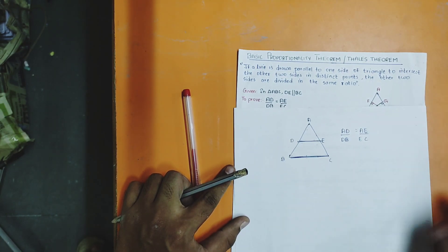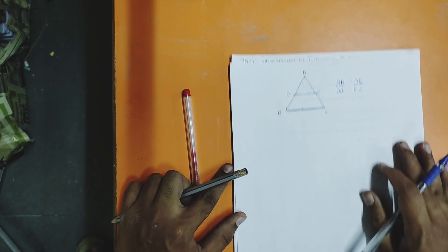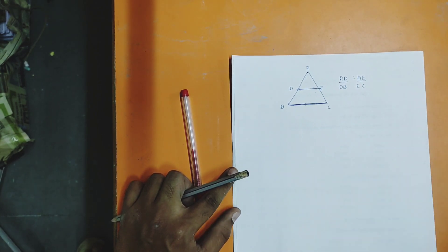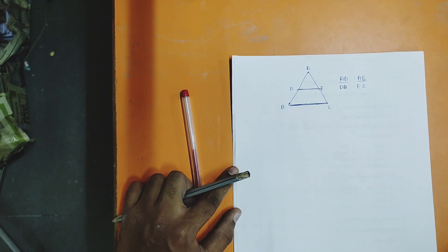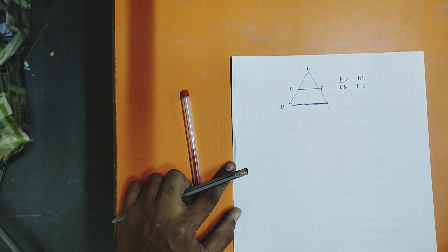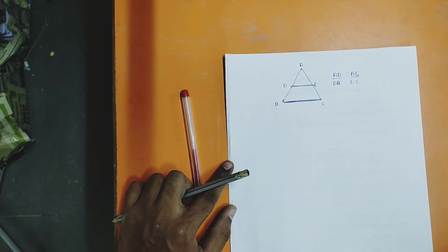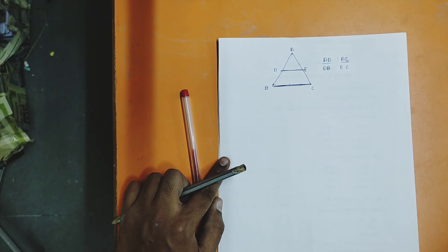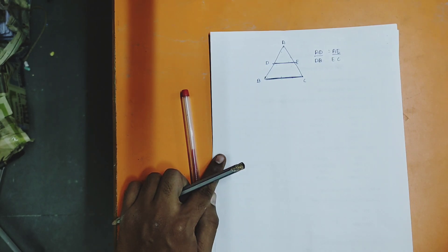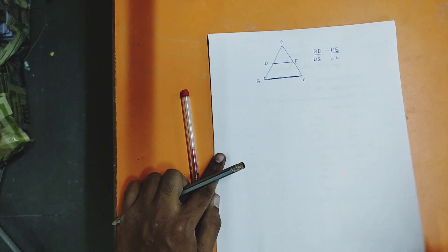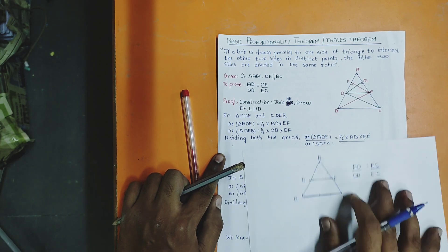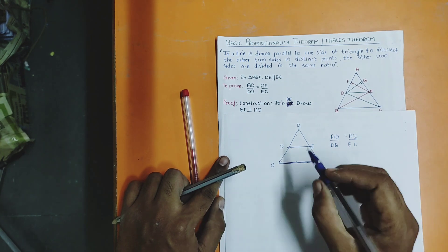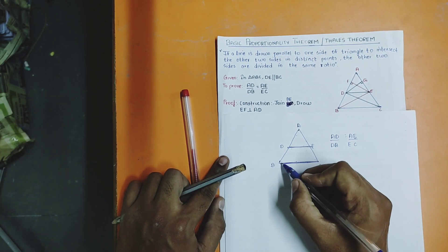The basic proportionality theorem has nothing to do with angles — it is entirely about the length of the sides. Whenever you have to find the length of a side, you basically need to know the area of the triangle. The construction is simple — just listen.